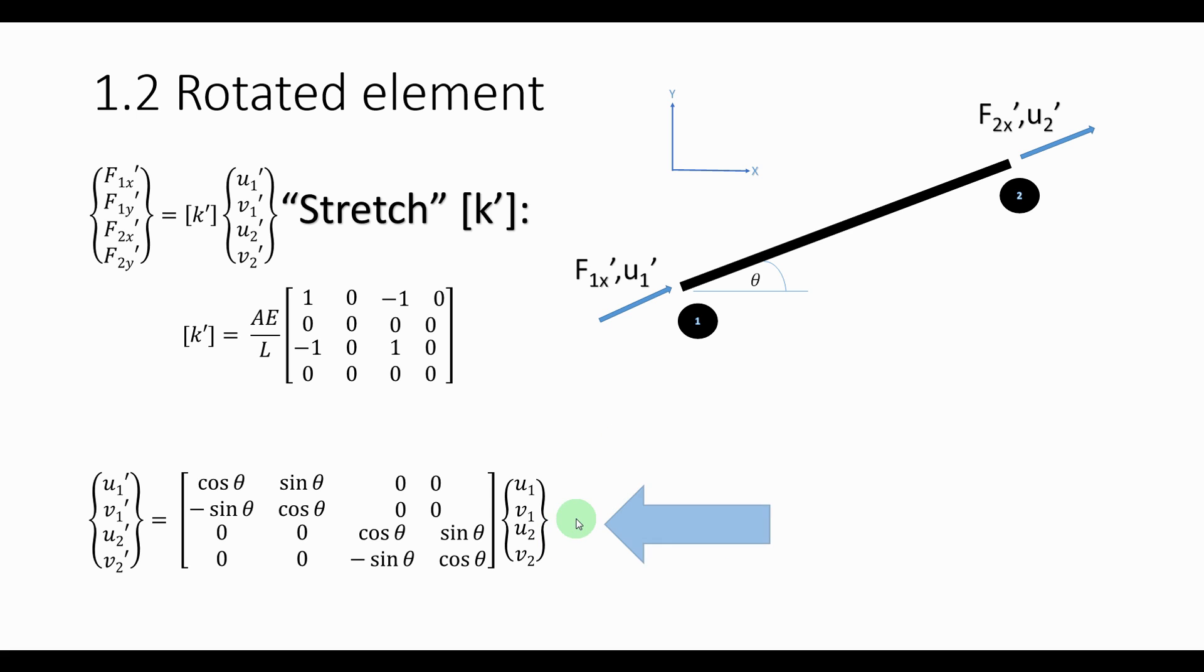So we are going to transfer that to D accent equals T times D which D accent is the local displacement and the rotation to the global displacement. And accordingly we can say the same for F accent equals T times the F that we want.